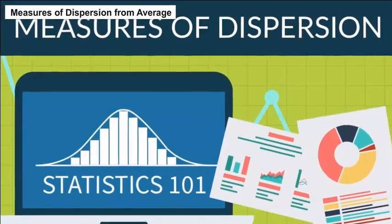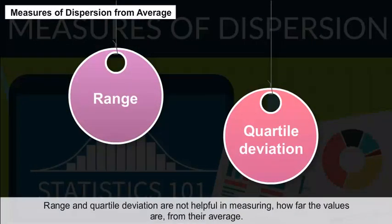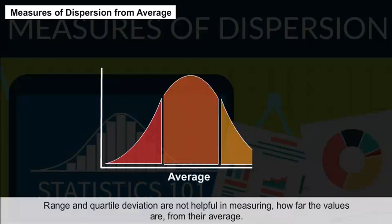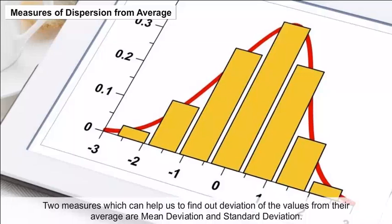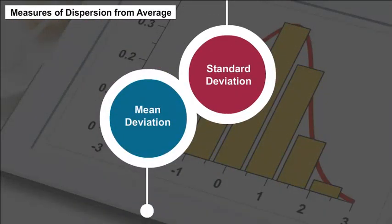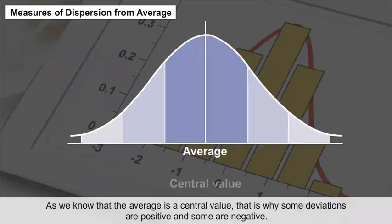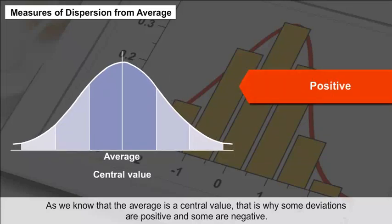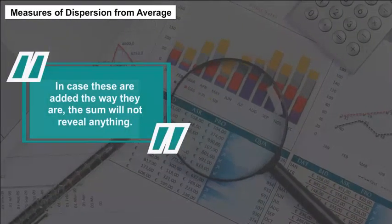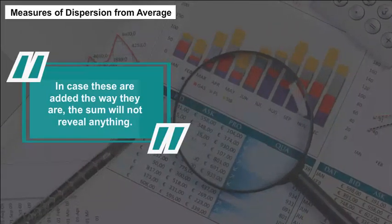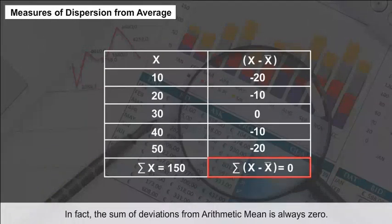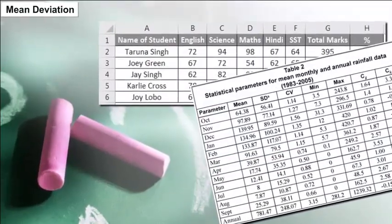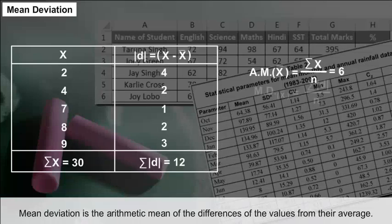Measures of Dispersion from Average: Range and quartile deviation are not helpful in measuring how far the values are from their average. Two measures which help find out deviation of values from their average are mean deviation and standard deviation. Since the average is a central value, some deviations are positive and some are negative. The sum of deviations from the arithmetic mean is always zero.